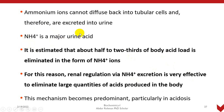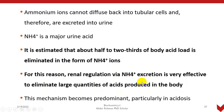Ammonium is a major urinary acid. It is estimated that about half to two-thirds of the body's acid load is eliminated in the form of ammonium ions — so it is the most predominant mechanism. For this reason, renal regulation via ammonium excretion is very effective at eliminating large quantities of acid produced in the body. This mechanism becomes particularly predominant in acidosis — if any acidotic condition such as respiratory or metabolic acidosis develops in the body, this mechanism comes to the rescue and eliminates excess hydrogen from the body.